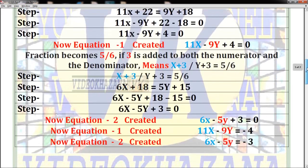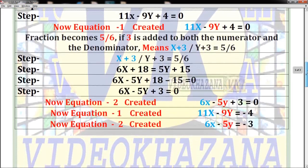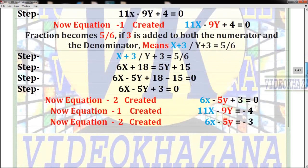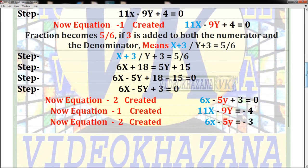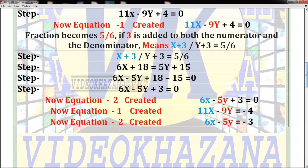Here, both equations have been created independently. The second equation is 6x - 5y = -3. We will apply the cross multiplication method, and you will get the simplest form of the two equations.